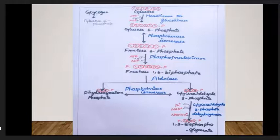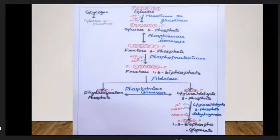The aldolase reaction splits fructose-1,6-bisphosphate into two 3-carbon molecules: dihydroxyacetone phosphate (DHAP) and glyceraldehyde-3-phosphate (G3P). The 6-carbon molecule is split into two 3-carbon molecules. DHAP and G3P have the same chemical formula but different structures, so triose phosphate isomerase converts DHAP to G3P.